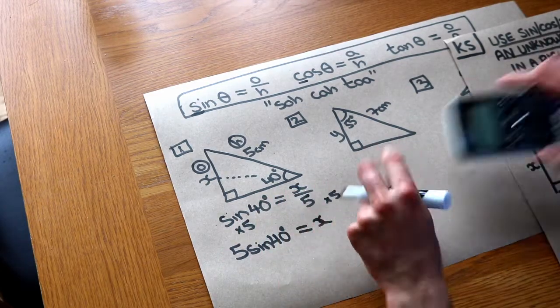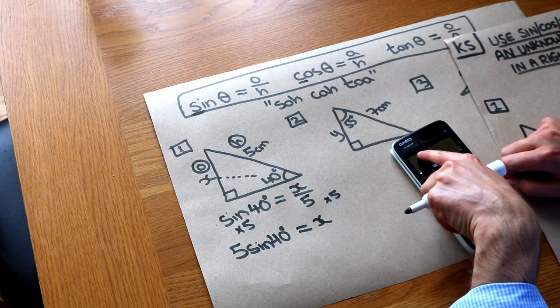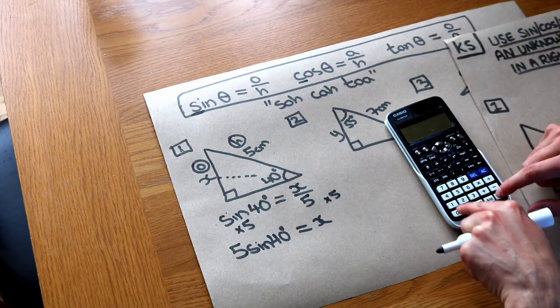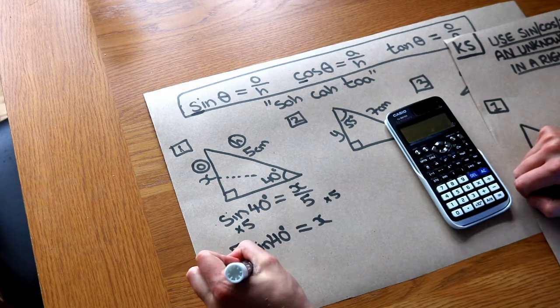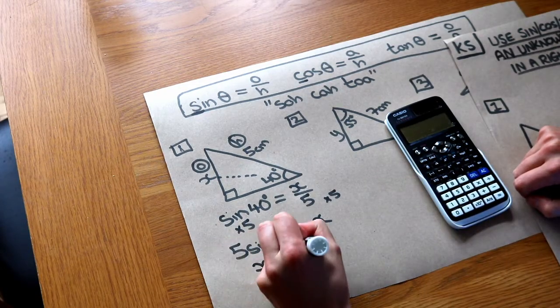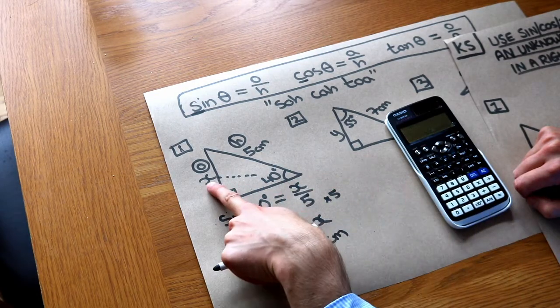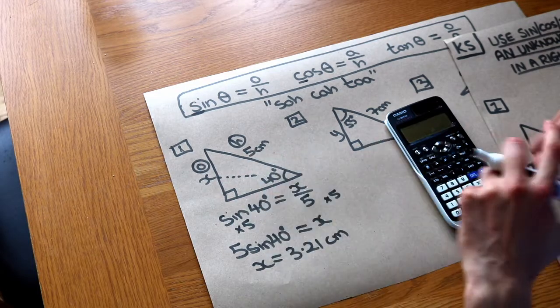And then we just put that on our calculator. So make sure there's a D for degrees at the top of your calculator. And I'm going to just write 5 sine 40 degrees, and that's going to give me 3.21 centimeters. And always do a sensible check. Does this look like a sensible length? 3.21? Well yes, it's a bit shorter than the 5.